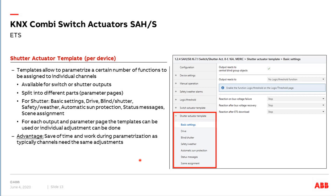Templates are also available for shutter functionality. A template means you create a parameterization for different parameter pages, and then you can decide later whether that parameterization is valid for other channels — maybe all channels in the device. You can choose the template instead of parameterizing each channel individually with the same parameters, saving a lot of time. In each channel, you decide whether to use the template or have individual programming. The application is split into seven parts.